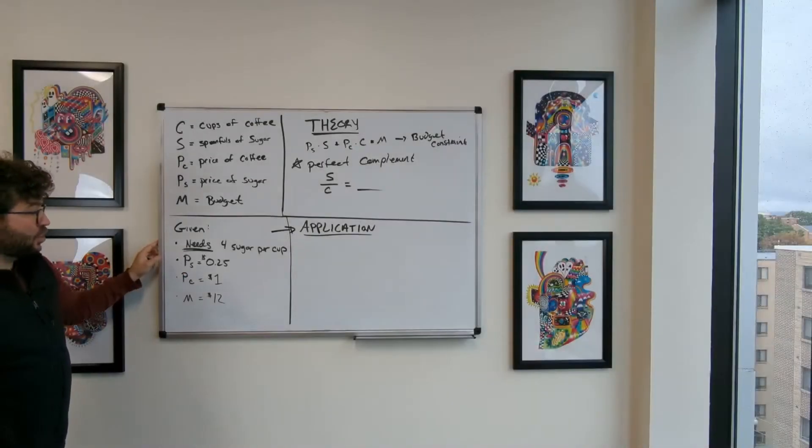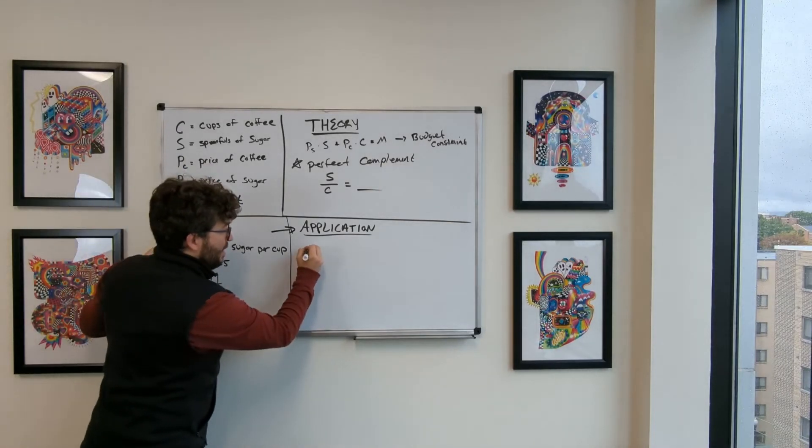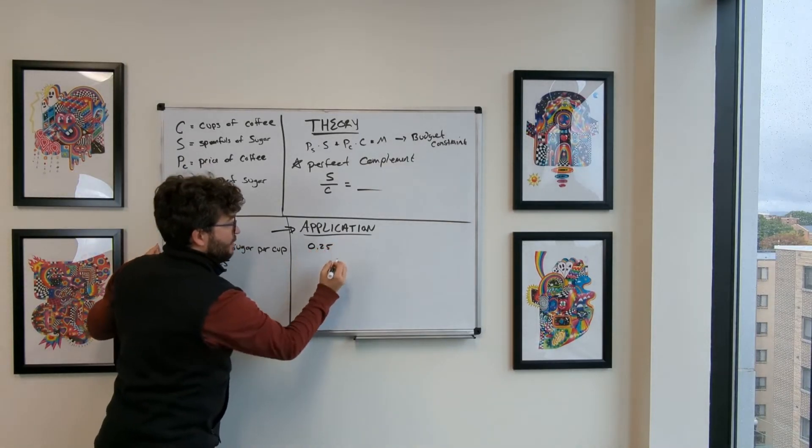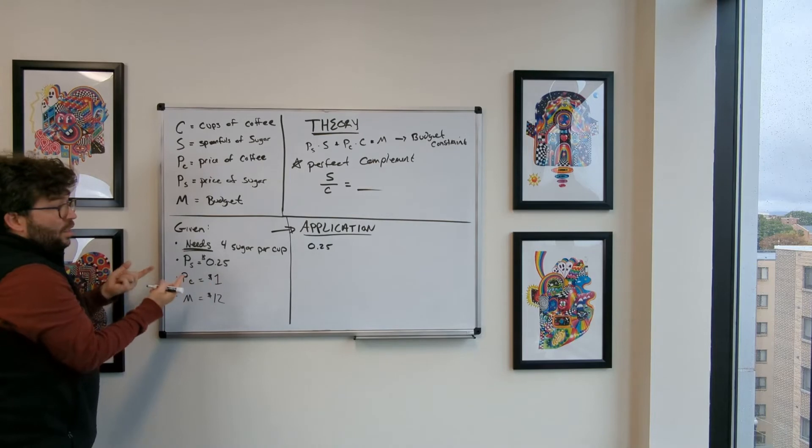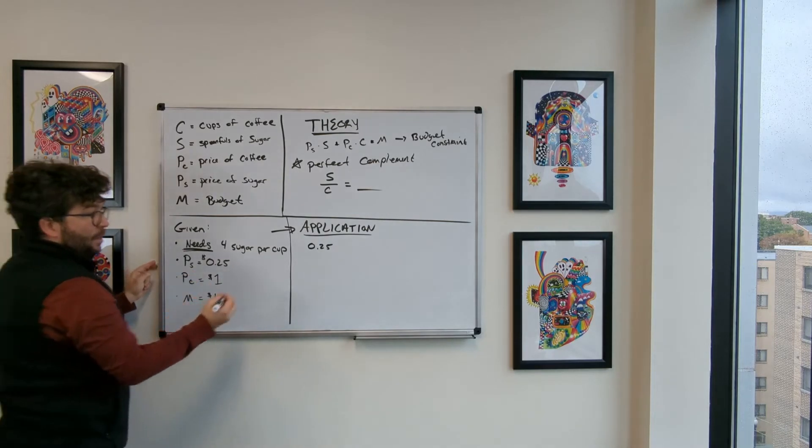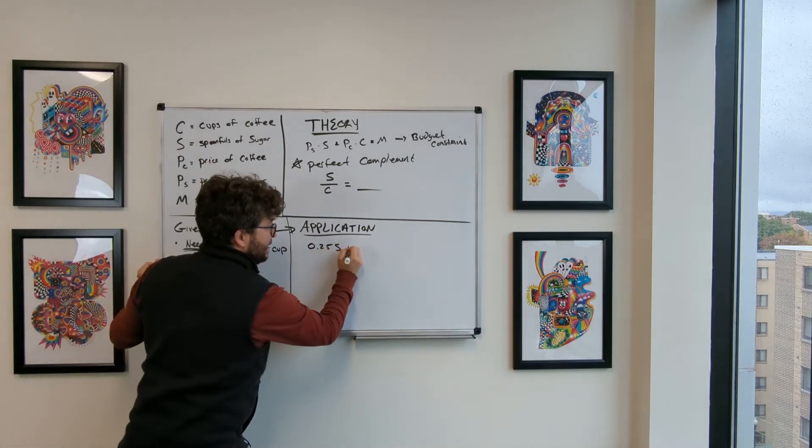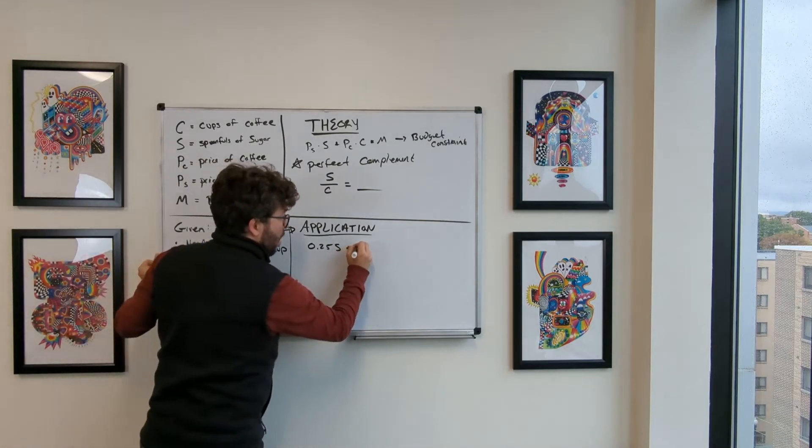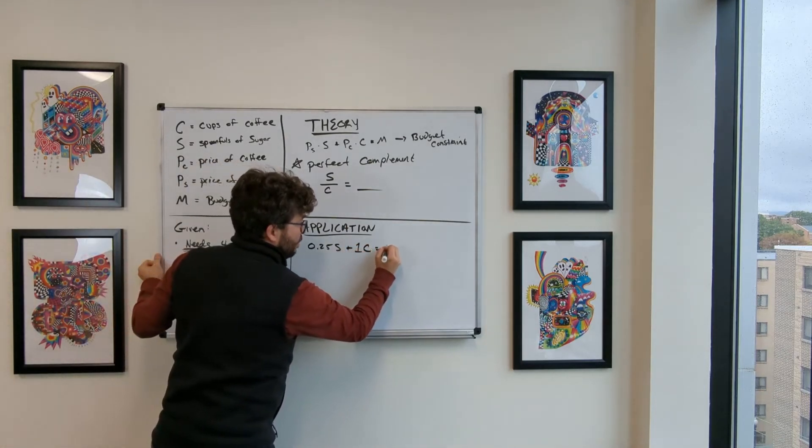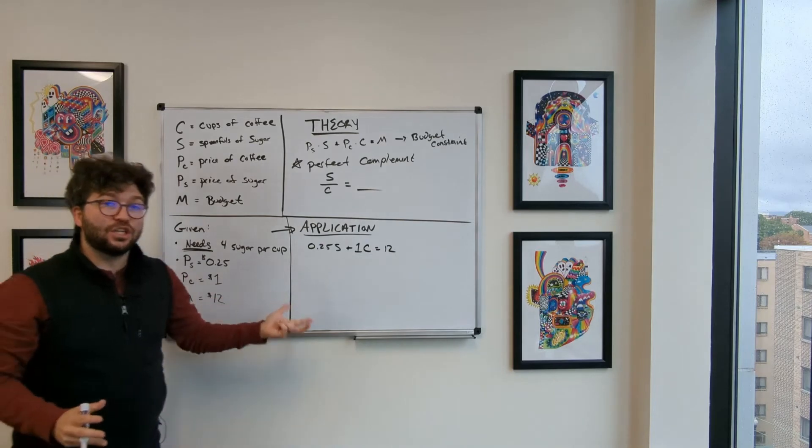Well, I know that the price of sugar is 25 cents. So I've got 0.25. I don't know the amount of sugar that we're going to buy. So that's going to be times S. Plus, I know the price of coffee is one times coffee equals 12.